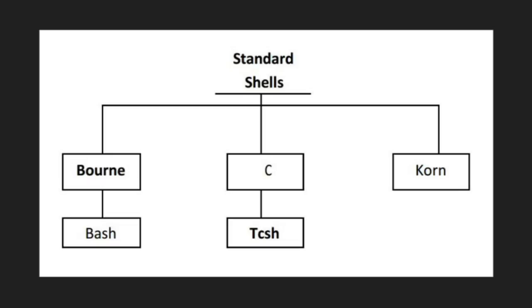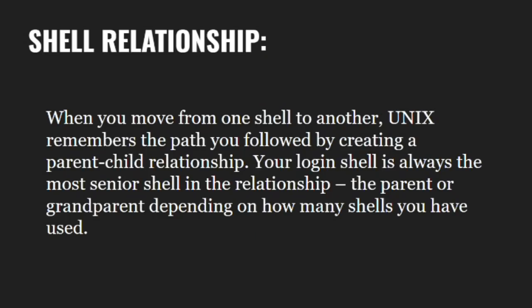The Korn shell is the newest and the most powerful one. When you move from one shell to another, Unix remembers the path you follow by creating a parent-child relationship. Your login shell is always the most senior shell in the relationship. For example, if your login shell is the Korn shell and you then move to the bash shell, the Korn shell becomes the parent and the bash shell is the child.